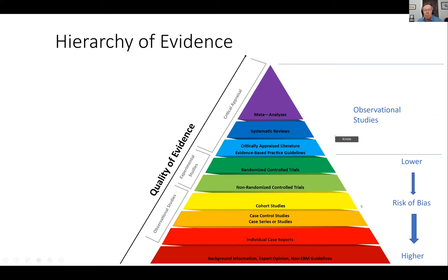Many of you may be familiar with this pyramid of evidence that you'll see in various publications. It splits things into observational studies like cohort studies, case control studies, and individual case reports at the bottom. Then we have randomized control trials and non-randomized control trials in the middle. And at the top of this evidence quality pyramid, we have meta-analysis, systematic reviews, and evidence-based guidelines. When we look at the risk of bias, the things at the top of the pyramid are observational and probably more prone to bias than randomized control trials.